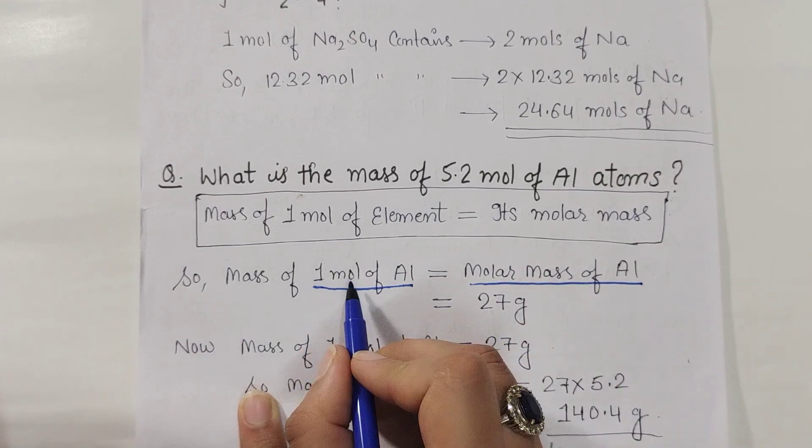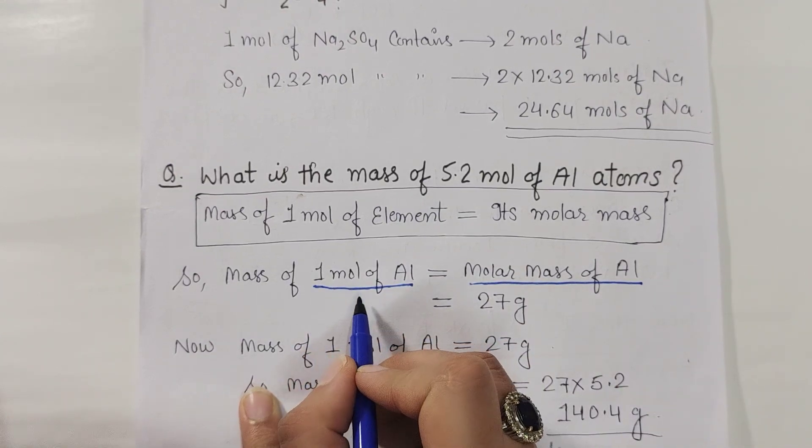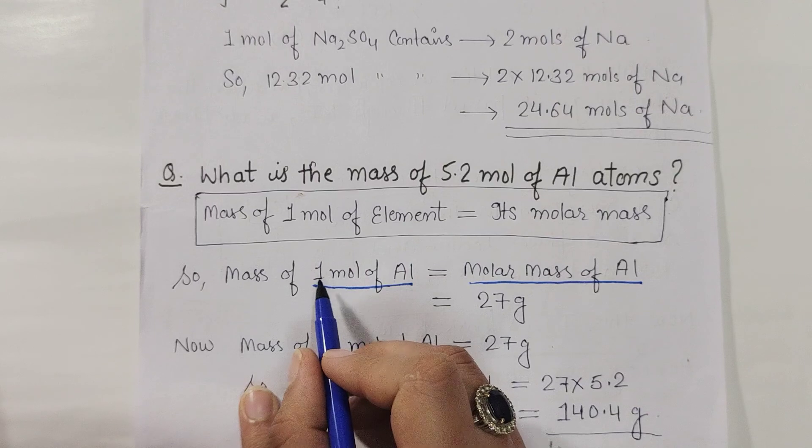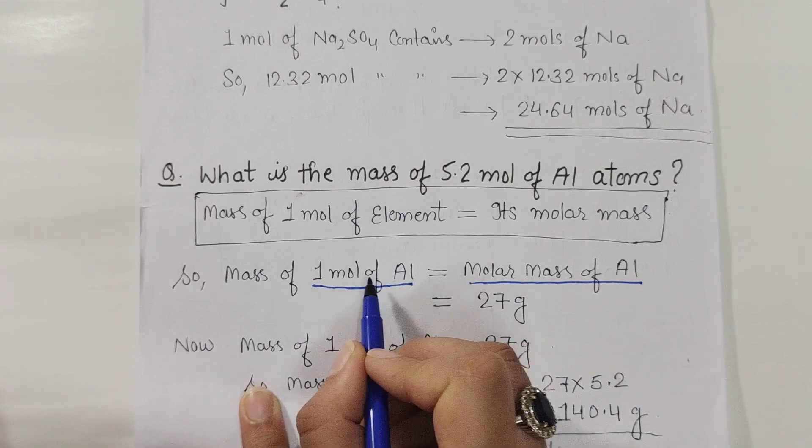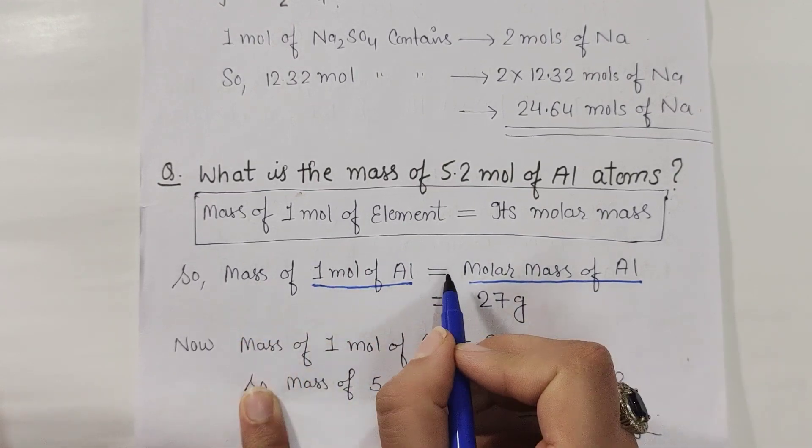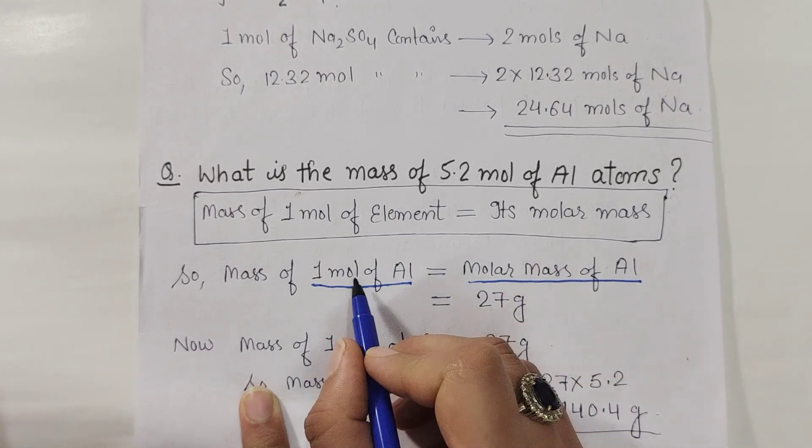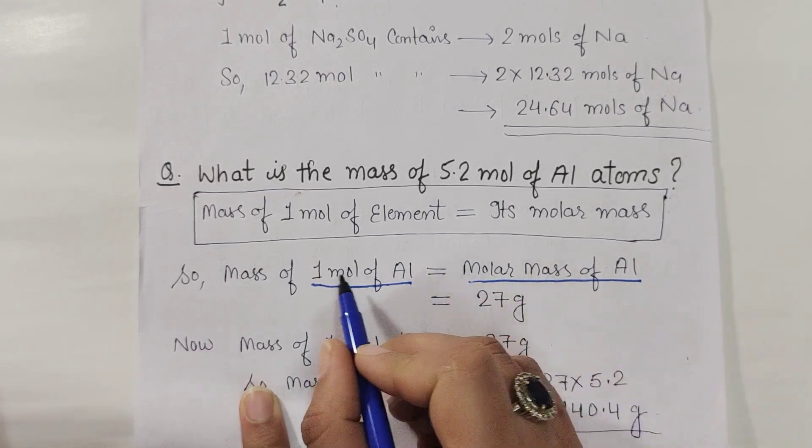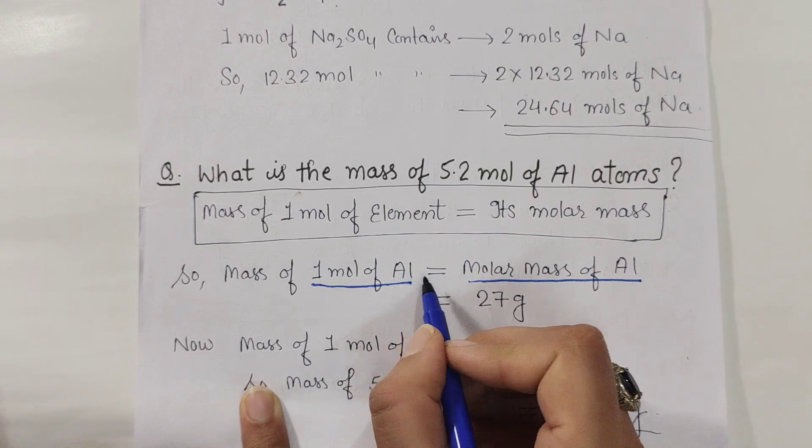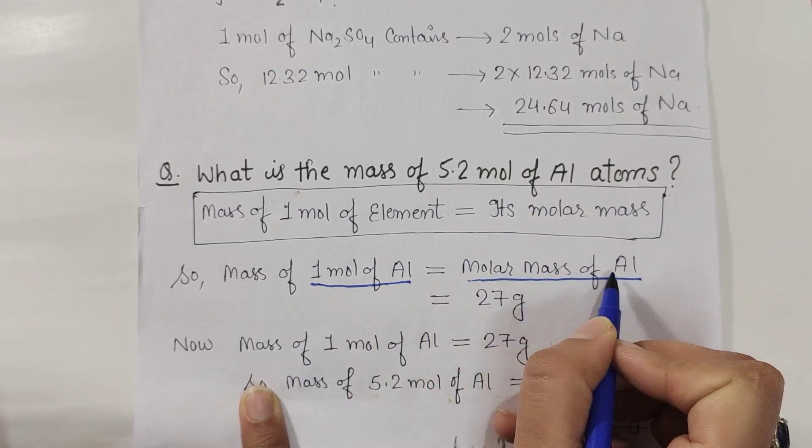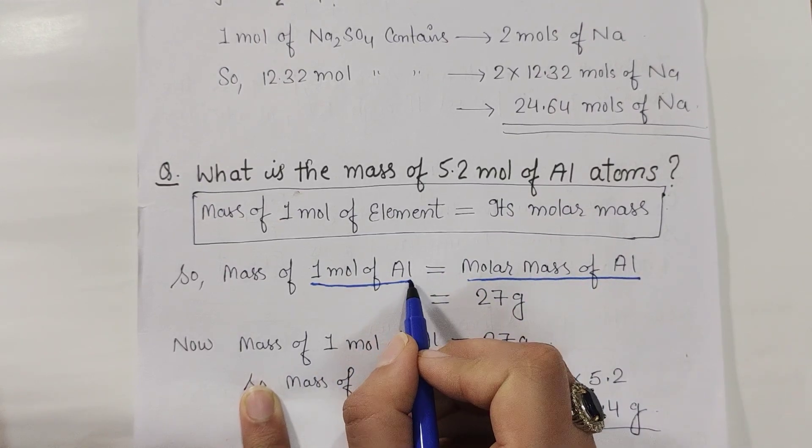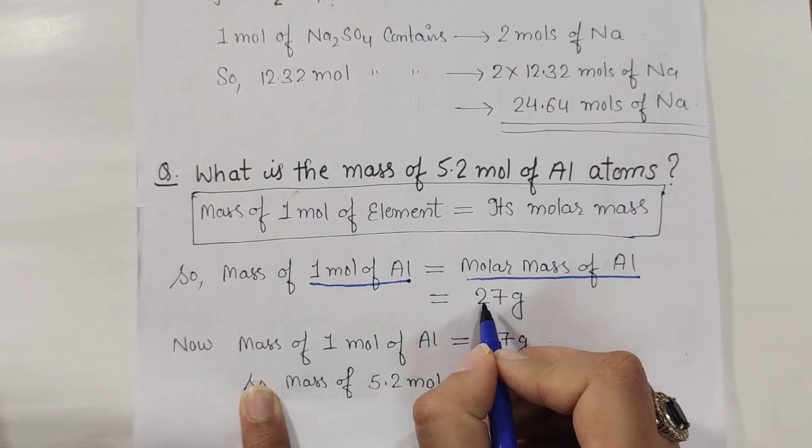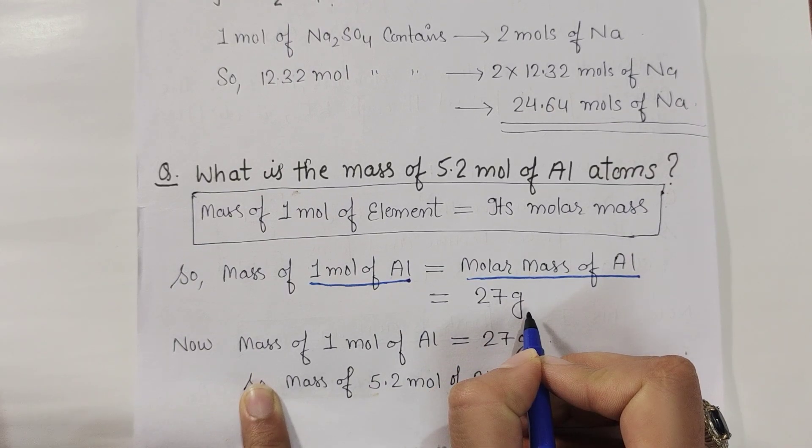If one mole of aluminium is talking about the mass of aluminium, then you need to know that one mole of any element has a mass equal to the molar mass. So now here, aluminium is 27 grams.